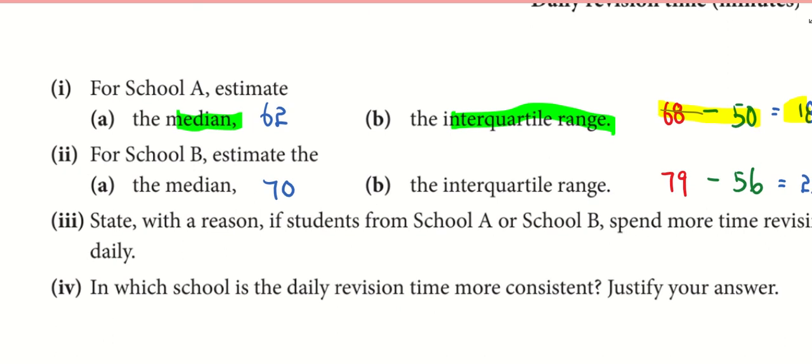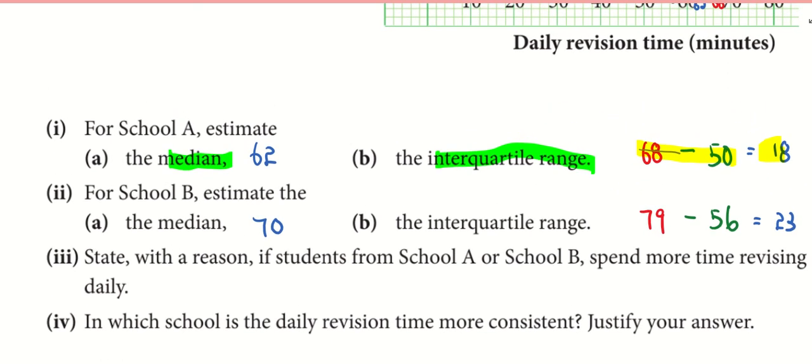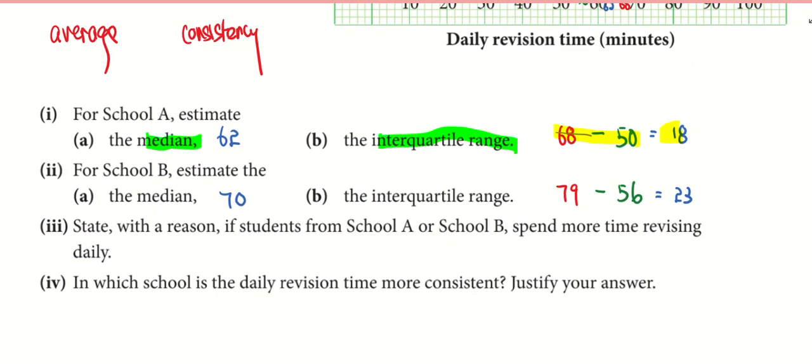Take note, in any set of statistical data, sometimes we need to do a little bit of explanation. We always go back to either average or consistency. It's quite clear cut. In part three, I look at the average. In part four, I look at the consistency.